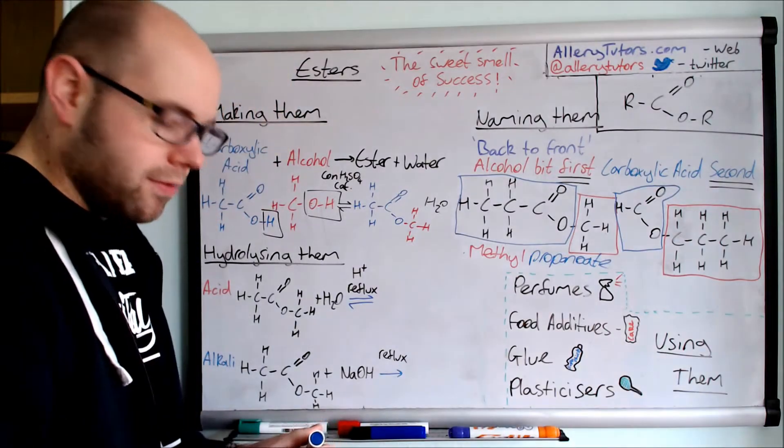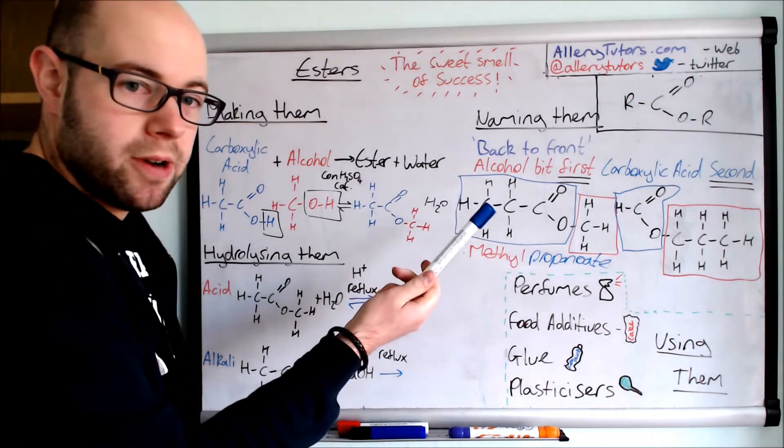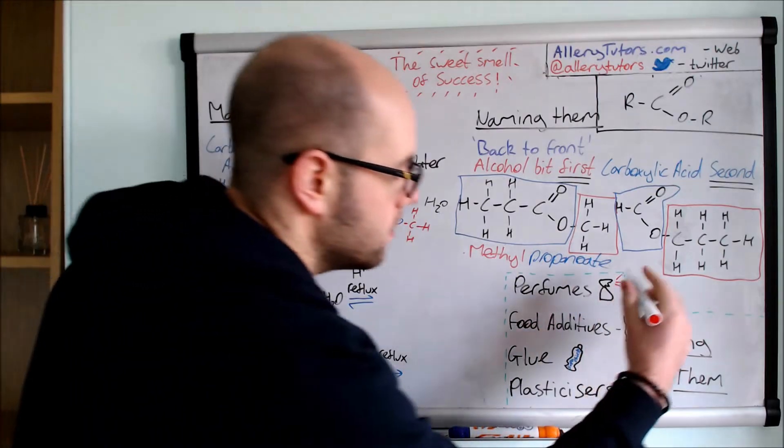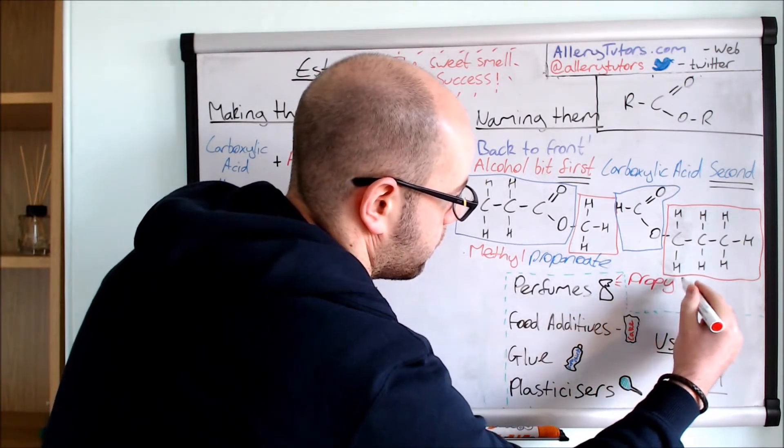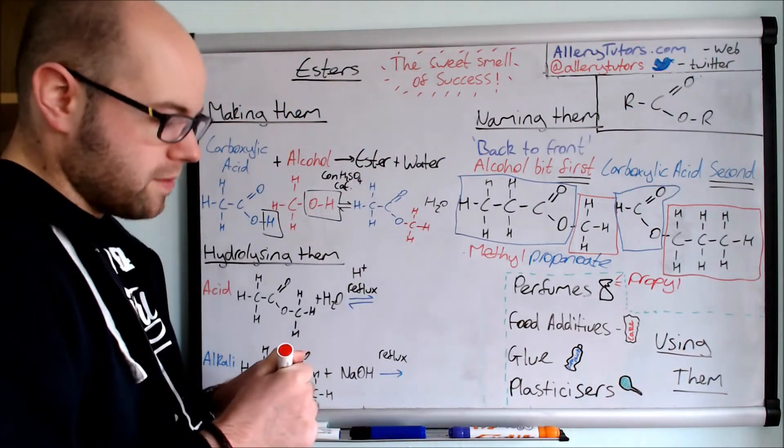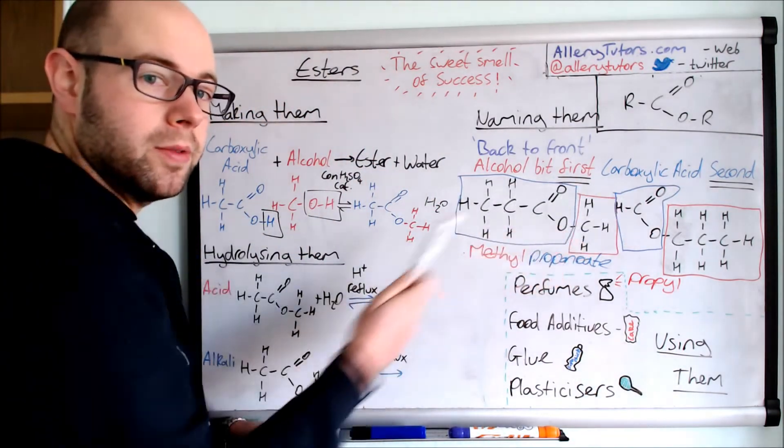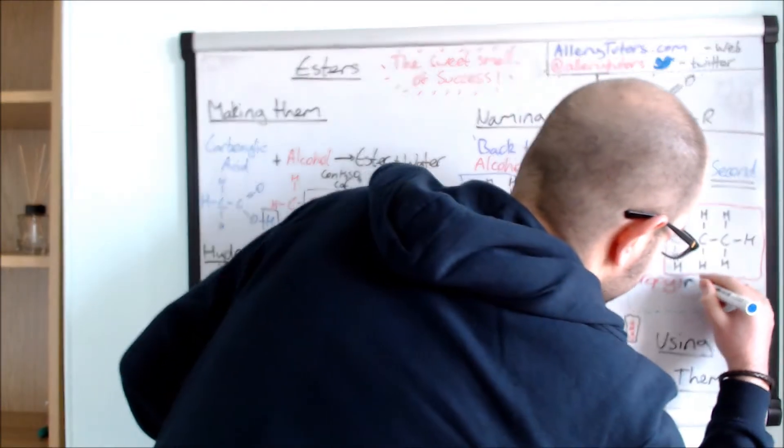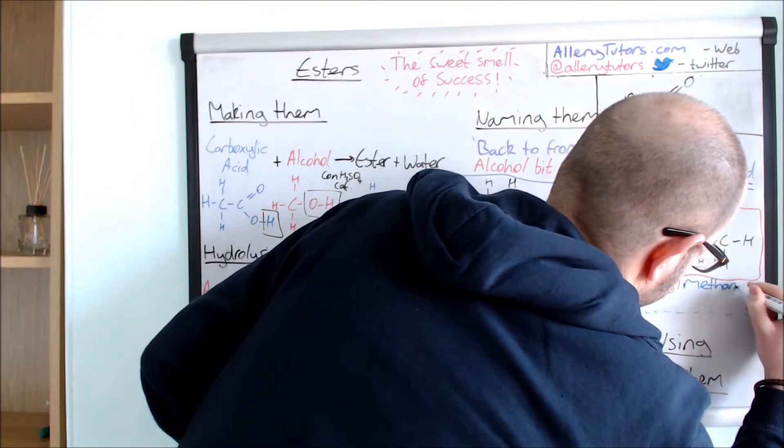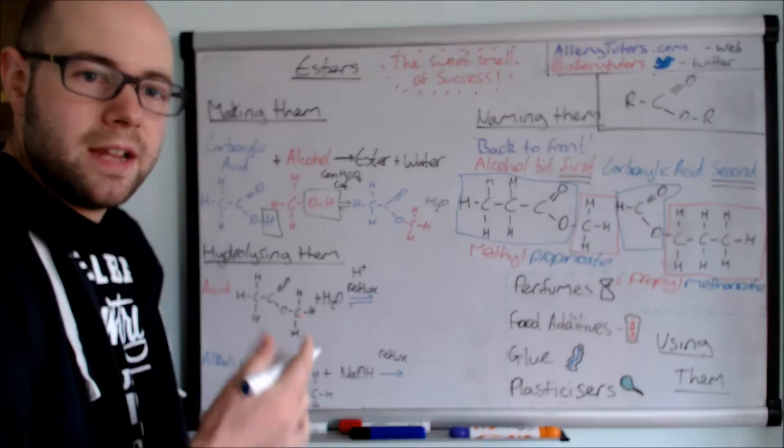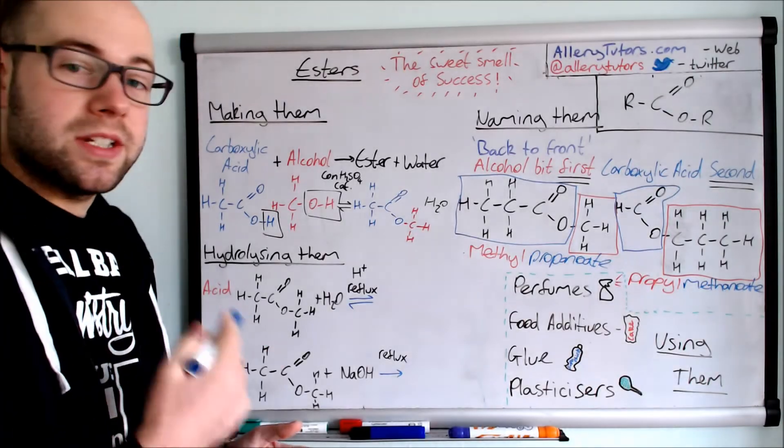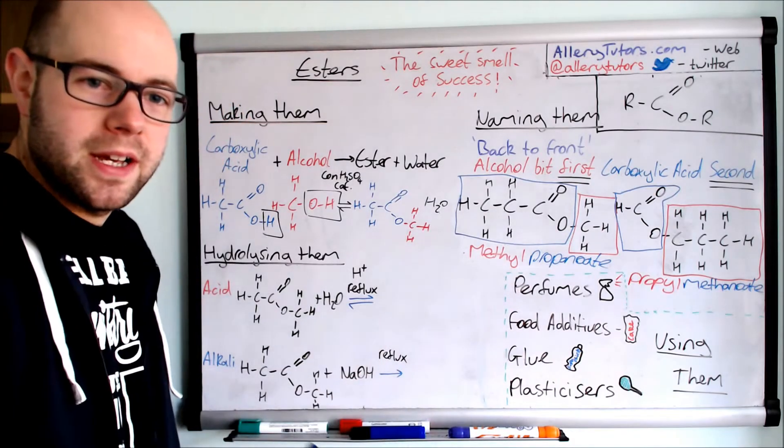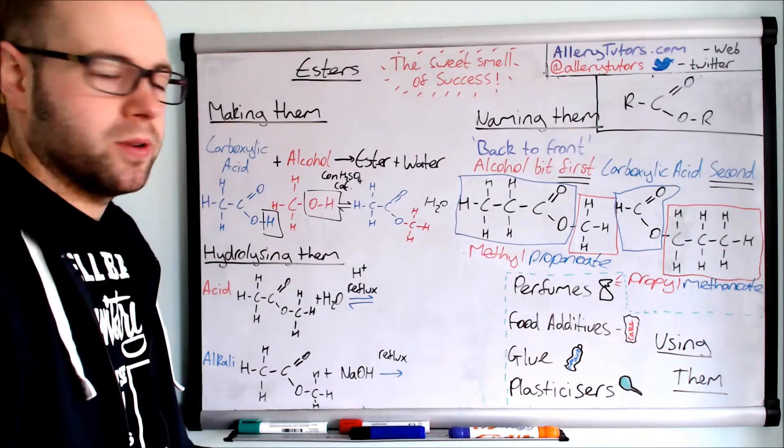So again, when we name it, we've got to start with the alcohol bit first. That's the bit on the right hand side. You can see that we have three carbons there this time. So this is going to be propyl. And then we've got our carboxylic acid bit. There's one carbon there. So this is going to be meth. So this is going to be propyl methanoate. So we're going to put that on there. Now you can see, same molecular formula, but we've arranged it differently. And the name of it is completely different as well. This one's propyl methanoate. This one's methyl propanoate. So make sure that you're naming them correctly. That's really important.